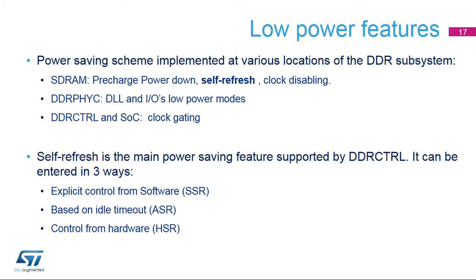The power saving scheme is implemented at various locations of the DDR subsystem: SDRAM with pre-charge power-down, self-refresh, and clock disabling; DDRPHYC with DLL and IOs low-power modes; and DDRCTRL and SOC with clock gating. Self-refresh is the main power saving feature supported by DDRCTRL. It can be entered in three ways: explicit control from software, or SSR; based on an idle timeout, or ASR; or control from hardware, or HSR.